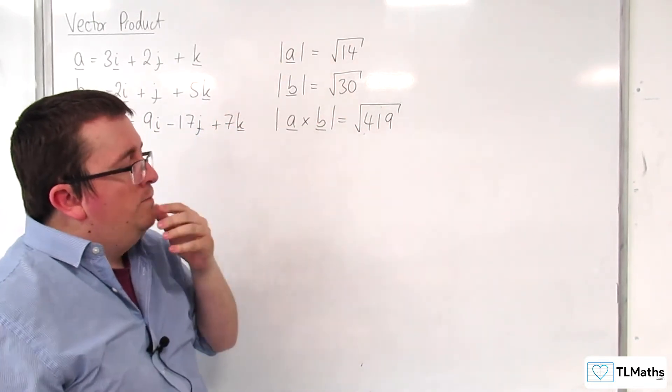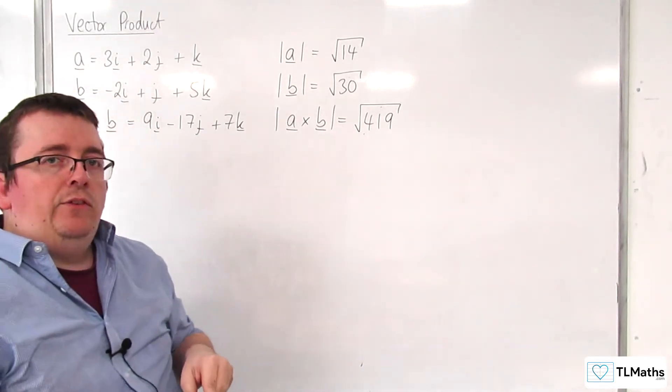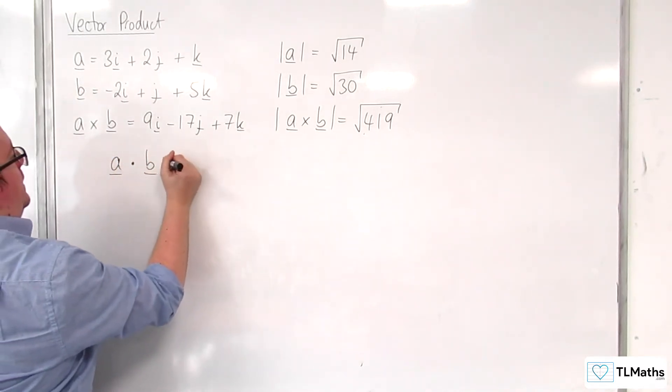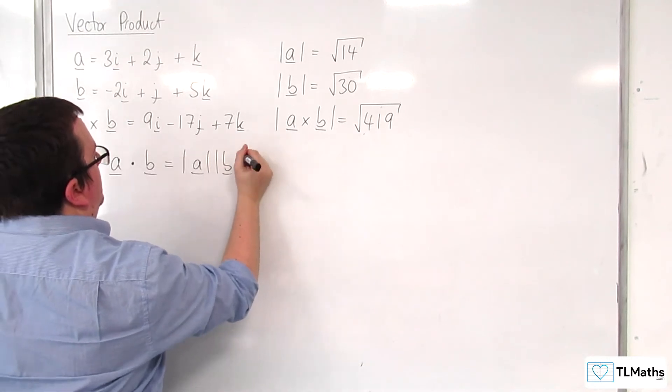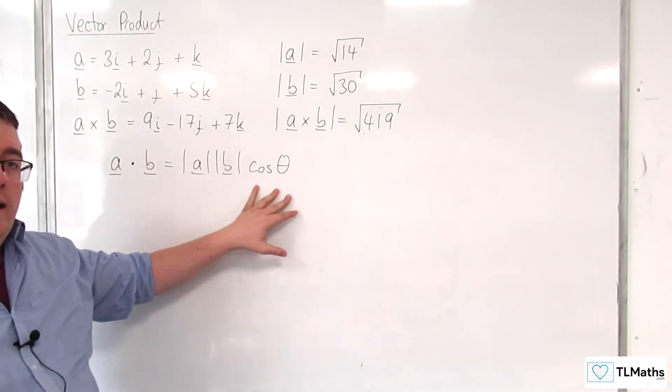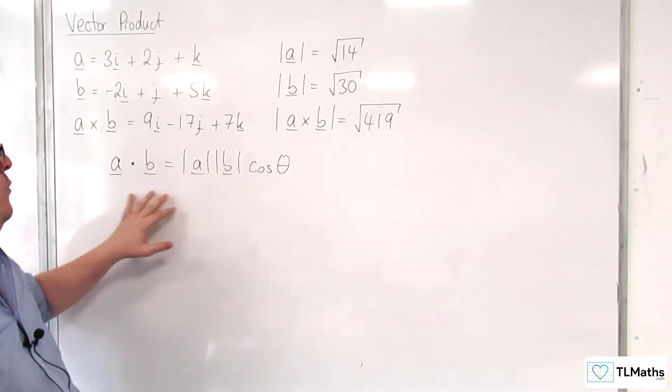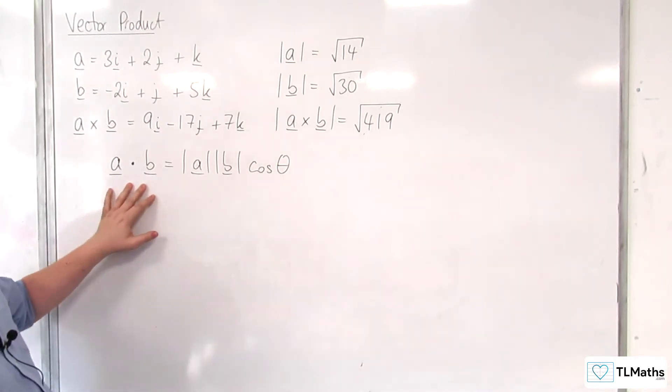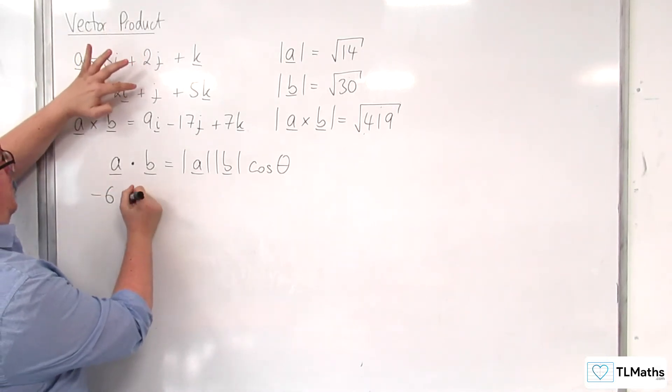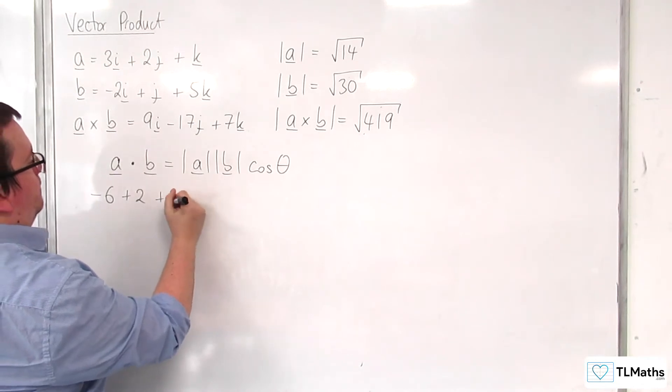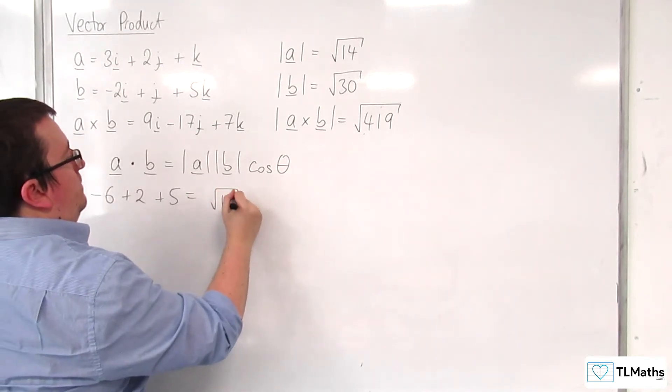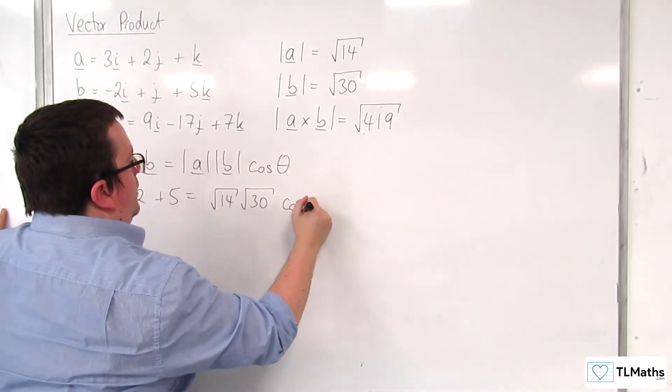So, what we're going to take a look at is the scalar product. Now, the scalar product said that A dot B is equal to mod A mod B cosine theta. So for this, I would be able to work out cosine theta for A and B. First of all, A dot with B is 3 times minus 2. So, minus 6 plus 2 times 1 plus 1 times 5. And that's going to be equal to root 14 times root 30 cosine theta.